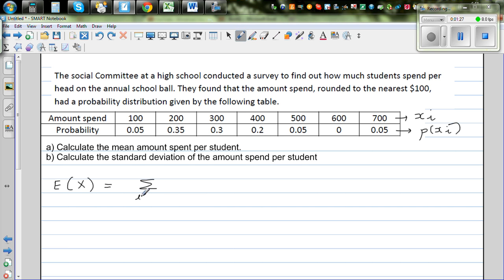Sigma i runs from 1 to n of Xi times the respective probability. So basically to find the mean, you are multiplying these two and adding.